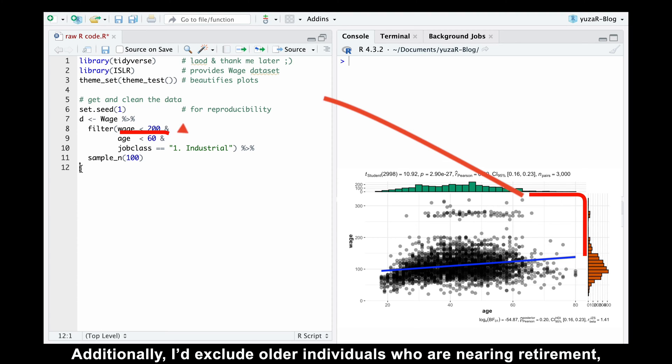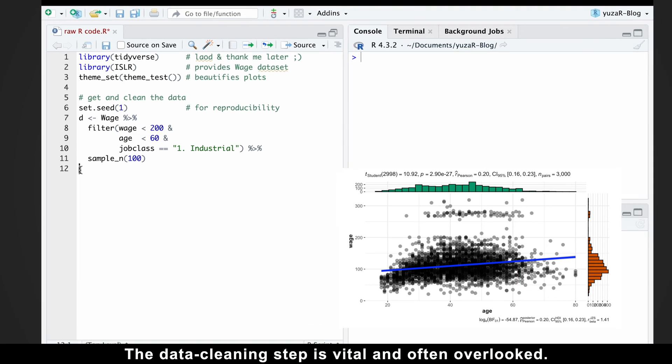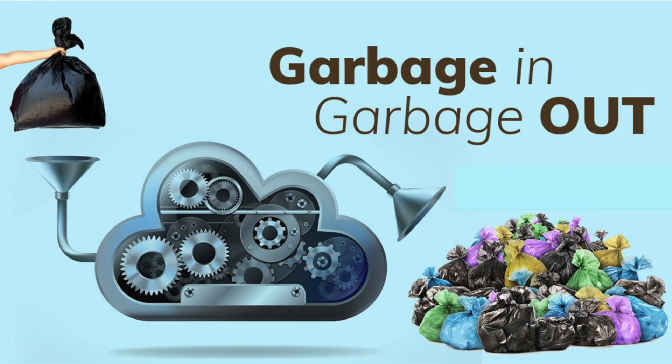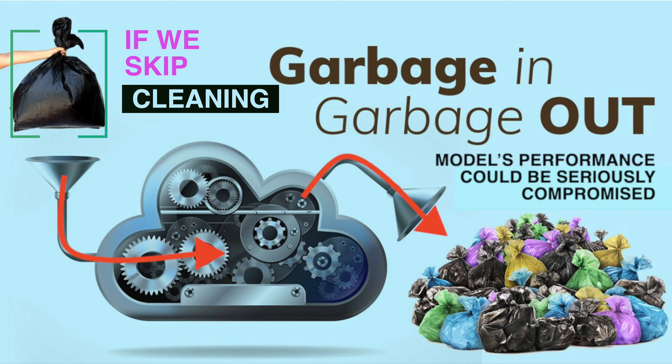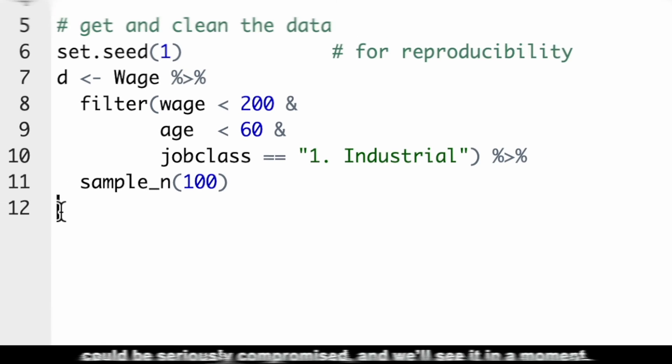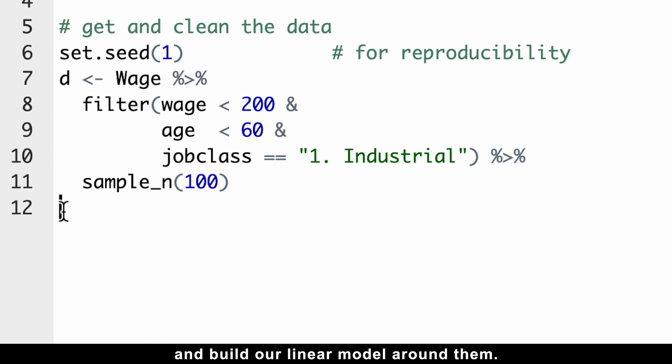Additionally, I'd exclude all individuals who are nearing retirement, as their salaries tend to decline. The data cleaning step is vital and often overlooked. Remember the phrase, garbage in, garbage out? If we skip data cleaning, our model's performance could be seriously compromised, and we'll see it in a moment. For now, let's take 100 random people from the industry and build our model around them.